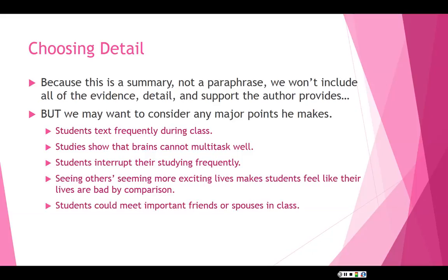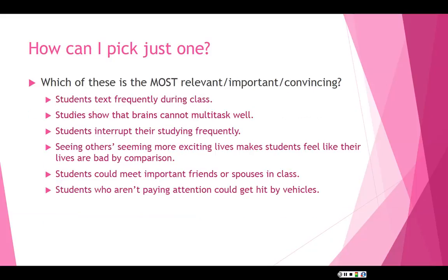He also says students can meet more important friends or spouses in class, and if they're not paying attention they could get hit by vehicles. Now I need to pick which one is the most relevant, important, or convincing. To me, the idea that brains cannot multitask well seems to be the one that sums up the others. The reason that texting during class, texting during studying, avoiding meeting people, getting hit by vehicles — all that — is because the brain cannot multitask well.